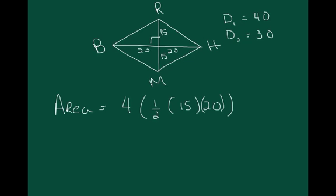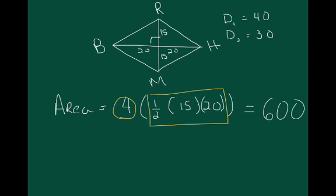One way would be to treat the rhombus as a collection of four right triangles. So we would multiply 4 times our triangle area formula, and we would get a total of 600.